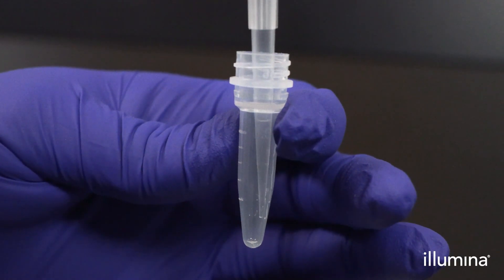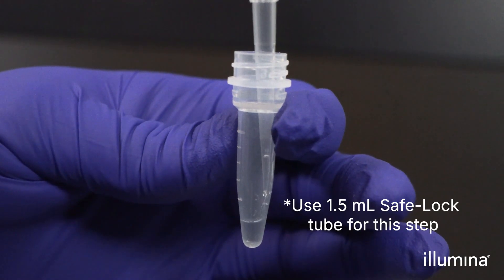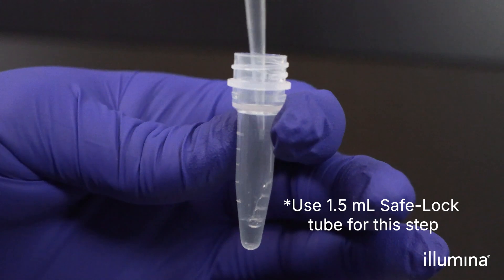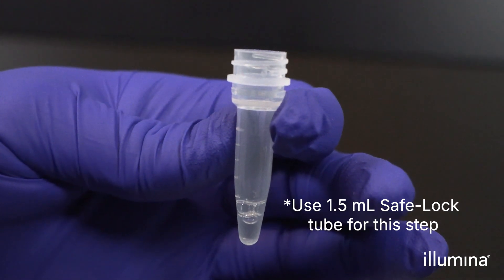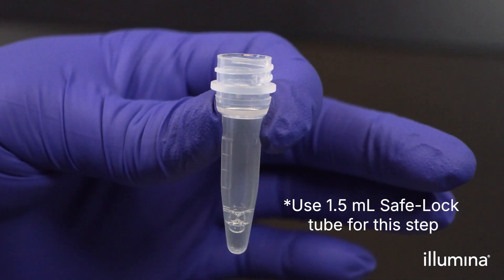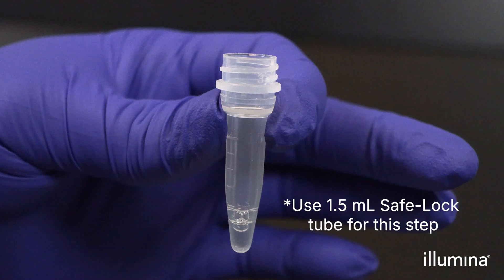Aliquot 40 microliters of CLB3 into the tubes for each sample being processed. For the remaining chemical lysis steps, we recommend processing one sample at a time.